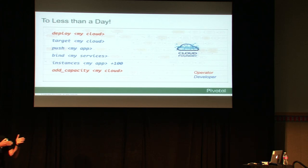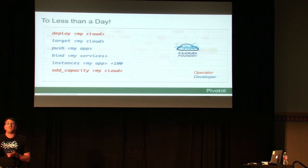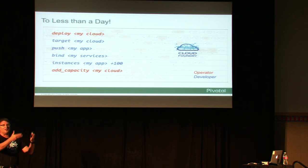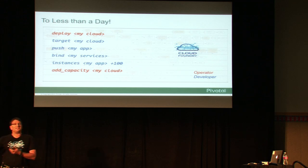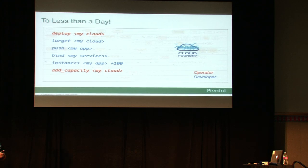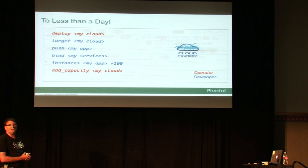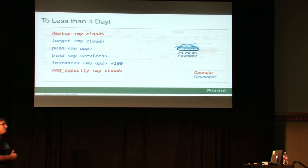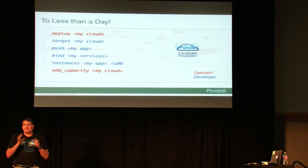Target means you can target your private cloud, public cloud, or a micro cloud that can run on your laptop. Within your private cloud you can target several environments — development, QA1, QA2 — and integrate this into a CI system so the output of a CI build moves your application to the next environment. The key is that the app itself doesn't change when you move between environments. Whether you're pushing a WAR file for a Java Spring app or an .rb file for Ruby, you simply deploy your finished app into the PaaS environment.